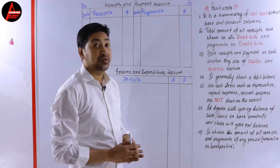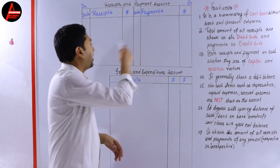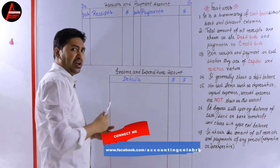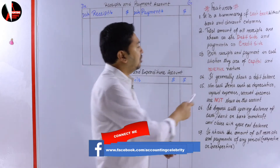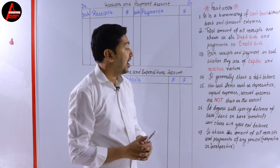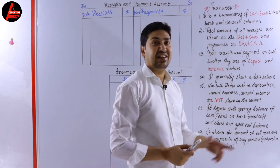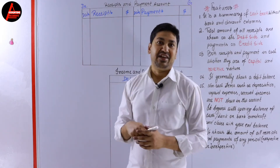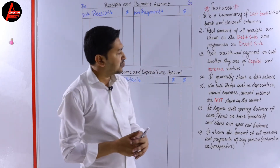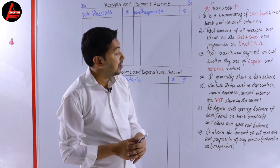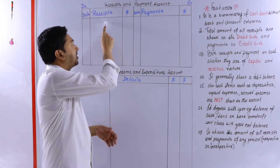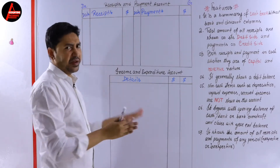Number four: it generally shows a debit balance - the balance will come generally on the debit side. If you have a bank overdraft then sometimes it may go to the credit side. Number five: non-cash items such as depreciation, unpaid expenses, accrued incomes are not shown in this account. Number six: it begins with the opening balance of cash or bank, or bank overdraft - you start to prepare this account with the balance of cash or bank whatever is given in the question.